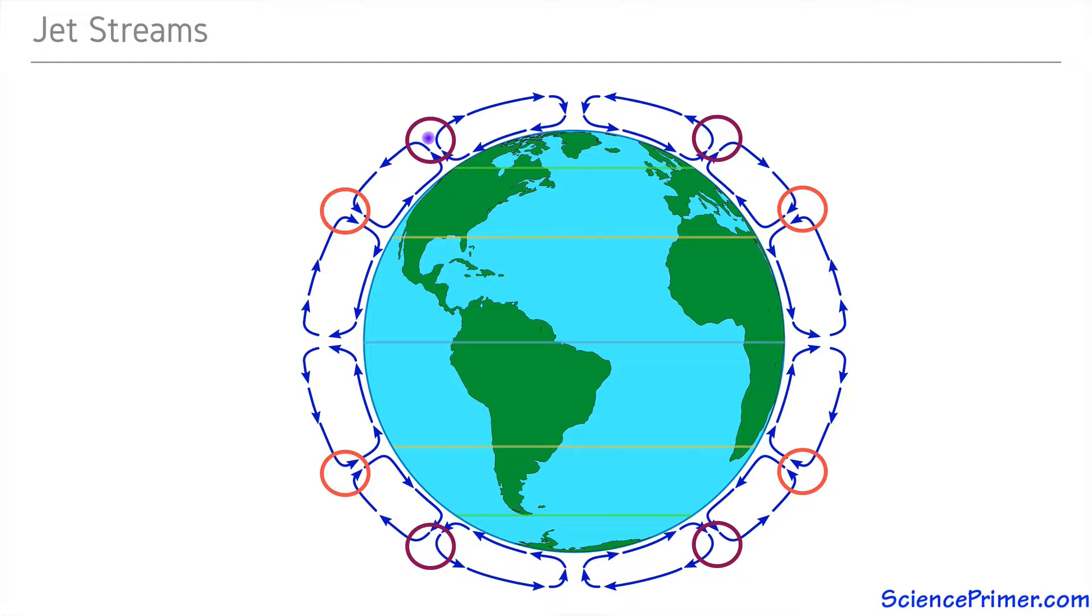These jets of air in the upper atmosphere are created as the air at the interface of each convection cell meets and this mixing air is deflected by the Coriolis effect.